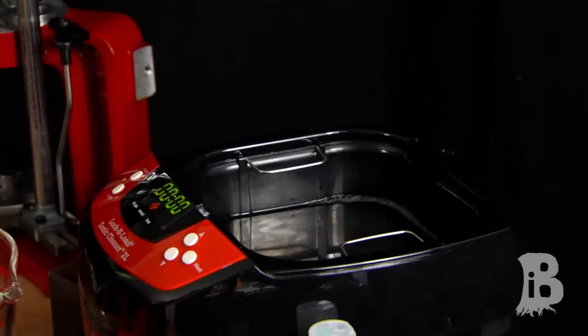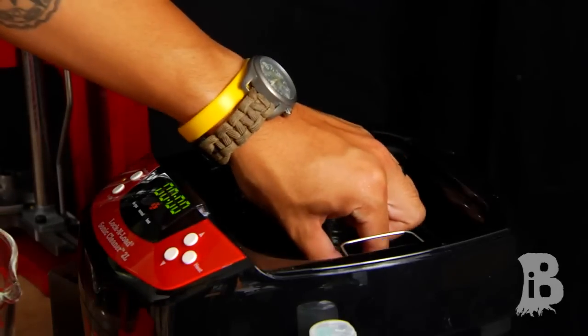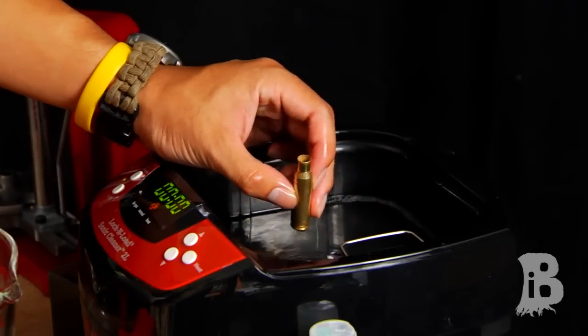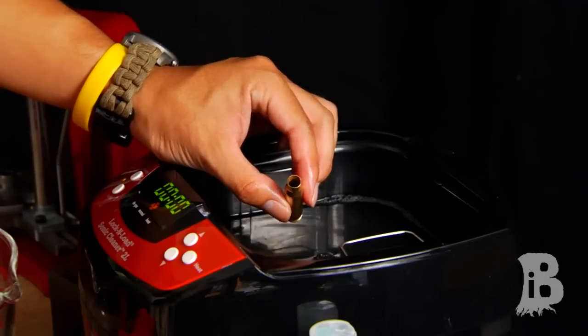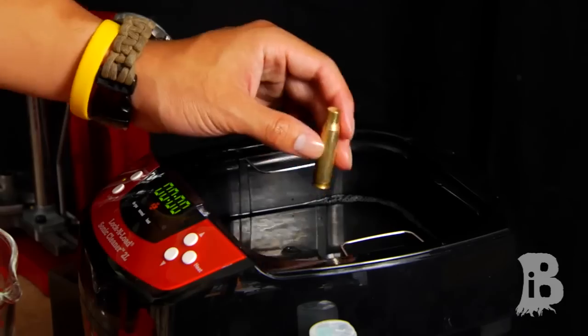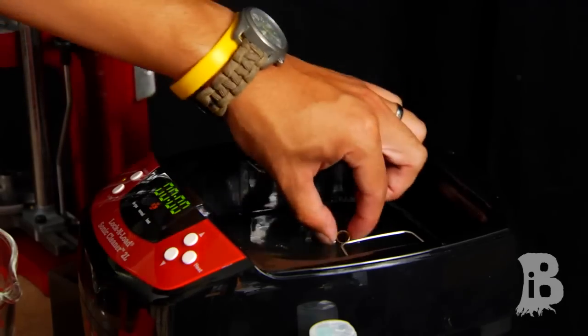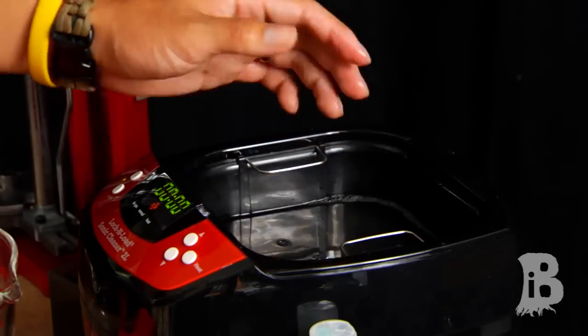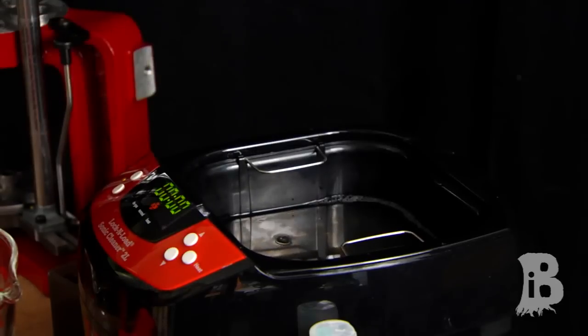Now that we ran this through, it's a good idea to double check the cleanliness of the case. You can just look down into the neck and with a good amount of light, you can see if it's clean all the way. This one is, so we're good to go. We're going to take this to a sink and rinse it off with hot water and then come back for the next few steps.